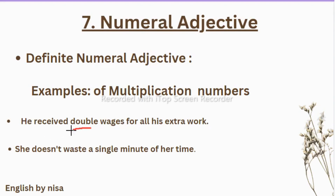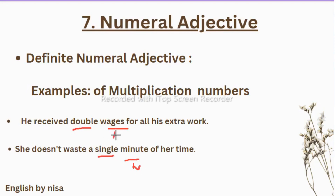In an exam if you see these types of words, you mark them as adjectives. 'Minute' is a noun, and before nouns adjectives come. 'Wages' is also a noun meaning salary, and 'double' is a multiplication numeral adjective. You don't need to write all this detail in an exam — simply label them as adjectives.